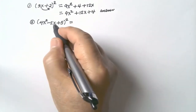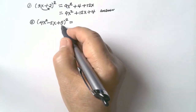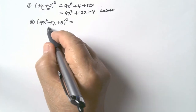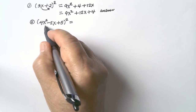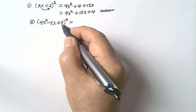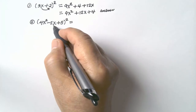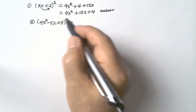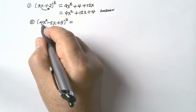Multiply the result by 2. Multiply the first term by the third, then multiply the result by 2. Multiply the second term by the third term, and then multiply the result by 2.